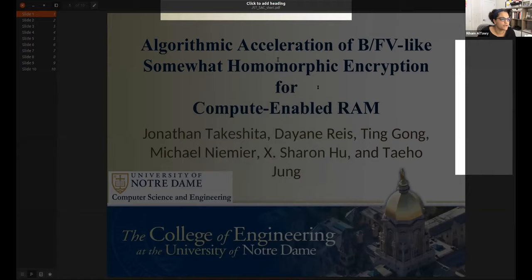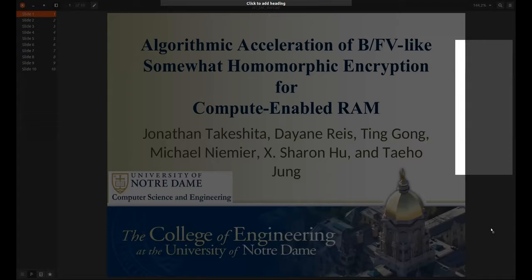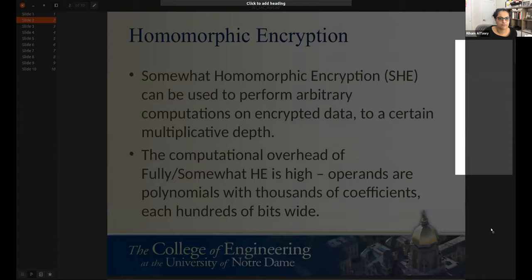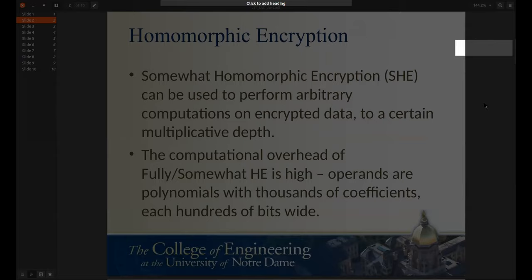Our next paper is Algorithmic Acceleration for BFV-like Somewhat Homomorphic Encryption for Compute-Enabled DRAM. The paper is authored by Jonathan DeKatch, Diane Rice, Ting Gong, Michael Niemeyer, Sharon Hu, and Tay-Jyi Zhang. I'm assuming it will be presented by Jonathan. Yes, that's correct. Yeah, can you hear me? All right. This paper is about using a special hardware paradigm of compute-enabled RAM to accelerate somewhat homomorphic encryption, and specifically about enabling some advanced algorithmic optimizations in this hardware paradigm.